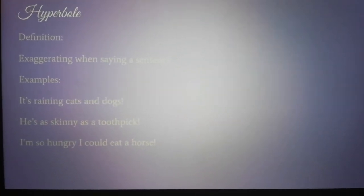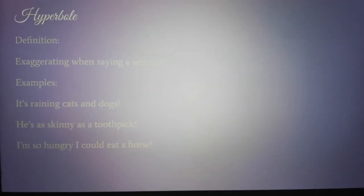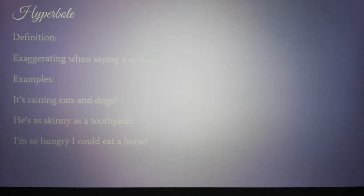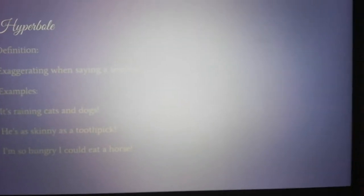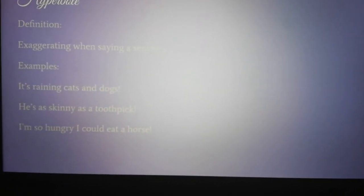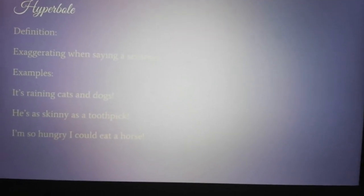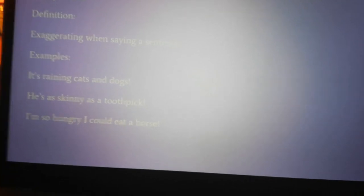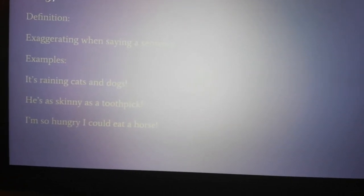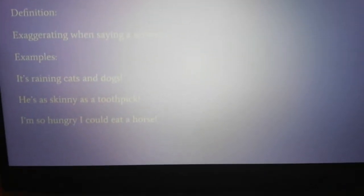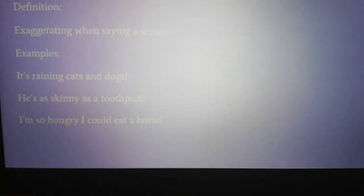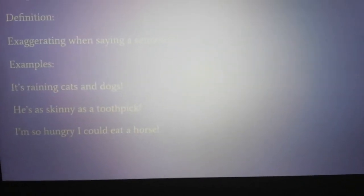Hyperboles. A hyperbole is when you say a sentence but you're exaggerating it a lot. One example is: it's raining cats and dogs, which is also an idiom. Another is: he's as skinny as a toothpick, which is also a simile. And: I'm so hungry I could eat a horse. Obviously they don't mean what they're literally saying — they're just exaggerating a little bit.